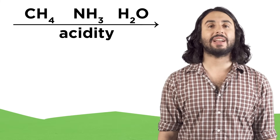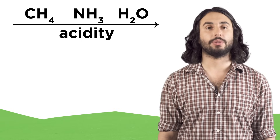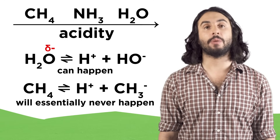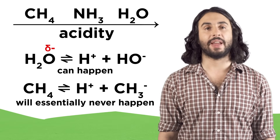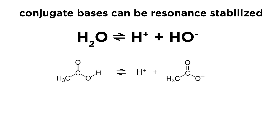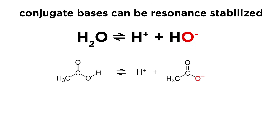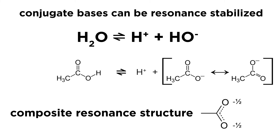Also, the more electronegative an atom, the better it is at accommodating a negative charge. So an oxygen atom can more readily lose a proton than a carbon atom, which is why something like water is far more acidic than methane. Acids are also stronger when their conjugate bases are resonance stabilized. A carboxylic acid is about a trillion times stronger an acid than water, even though both leave an oxyanion after deprotonating. This is because the conjugate base of the carboxylic acid can share the burden of the negative charge between two oxygen atoms by resonance, while hydroxide cannot. These resonance structures don't actually exist, but rather the composite resonance structure does, which shows delocalized pi electron density distributed about that portion of the molecule. More on this in organic chemistry.